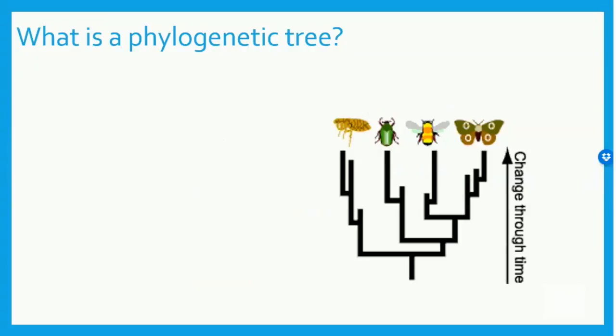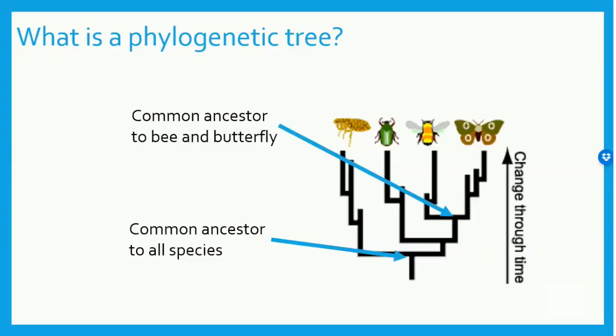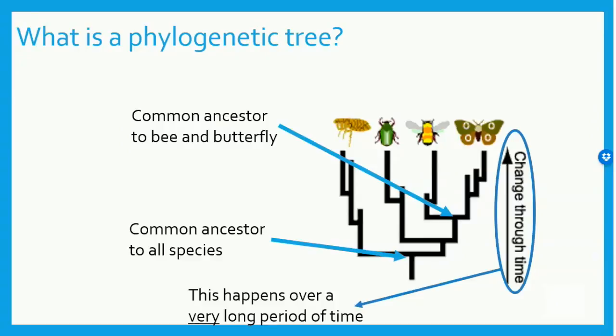Scientists use these tree-like drawings called phylogenetic trees to show how organisms have evolved. The base of the tree represents a common ancestor to all species. Above that, there are also more recent common ancestors. Here, there is a common ancestor to the bee and butterfly, but not to the beetle or flea. It's important to remember that this happens over a very long period of time — we're talking thousands of years at a minimum.